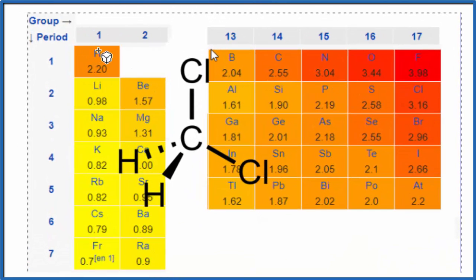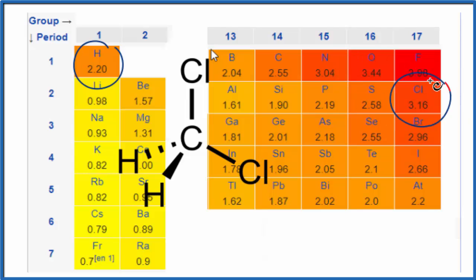So we have hydrogen right here, 2.2, and then chlorine, 3.16. So the general rule is if this is over 0.5, the difference between the two molecules, it's a polar molecule. So this is going to be a polar molecule based on that rule.